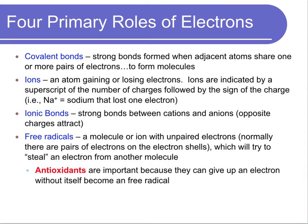Electrons are involved in covalent bonds — the strongest bonds that hold atoms together to create molecules. Ions are made when you lose or gain an electron. Sodium ion, Na+, has a plus one charge, meaning it lost one electron. Ionic bonds form when cations and anions, which are opposite charges, attract each other, creating a chemical bond. Free radicals are molecules with unpaired electrons. Since electrons don't like to be unpaired, free radicals steal electrons from other molecules, causing cellular damage. This is why you're told to take antioxidants — they donate electrons to free radicals without becoming damaged themselves.